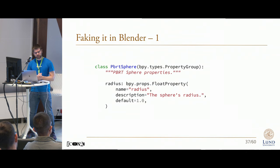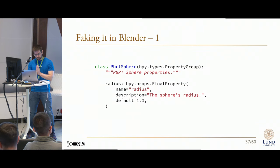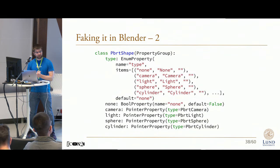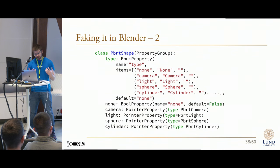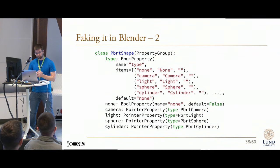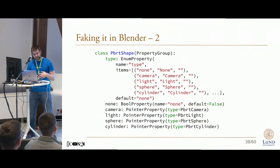First, we would start with creating a property class to represent the basis of this hierarchy, such as this one for the sphere. Then we would create another such property class to represent the entire hierarchy, which in this case would include cameras, light sources, and any other objects we want to have. But most crucially, we have an enumeration of these different options, allowing us to differentiate between them and store various properties in each subtype.